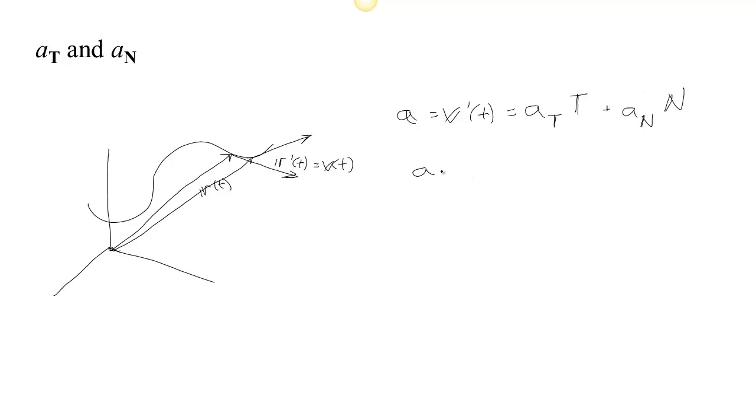And we'll see that there's a relationship between a sub T and the rate at which the arc length parameter s is changing. It will be the second derivative of arc length.